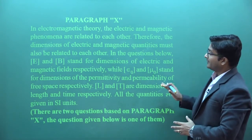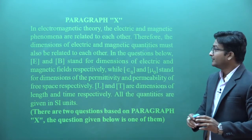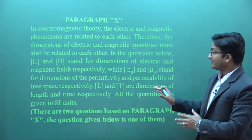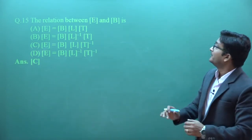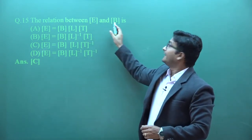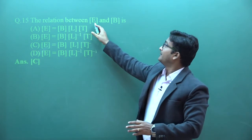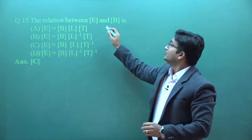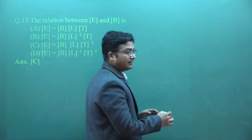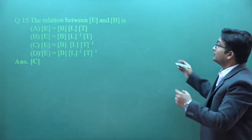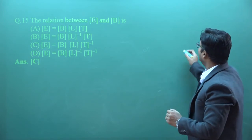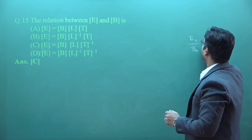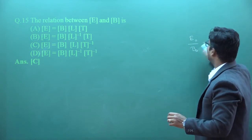The next paragraph contains two questions based on units and dimensions. The first question asks: what is the relation between the dimensions of E (electric field) and B (magnetic field)? This is a basic electromagnetic wave result — when an electromagnetic wave travels, E and B oscillate. The ratio of their maximum values E₀ to B₀ equals the speed of light C.